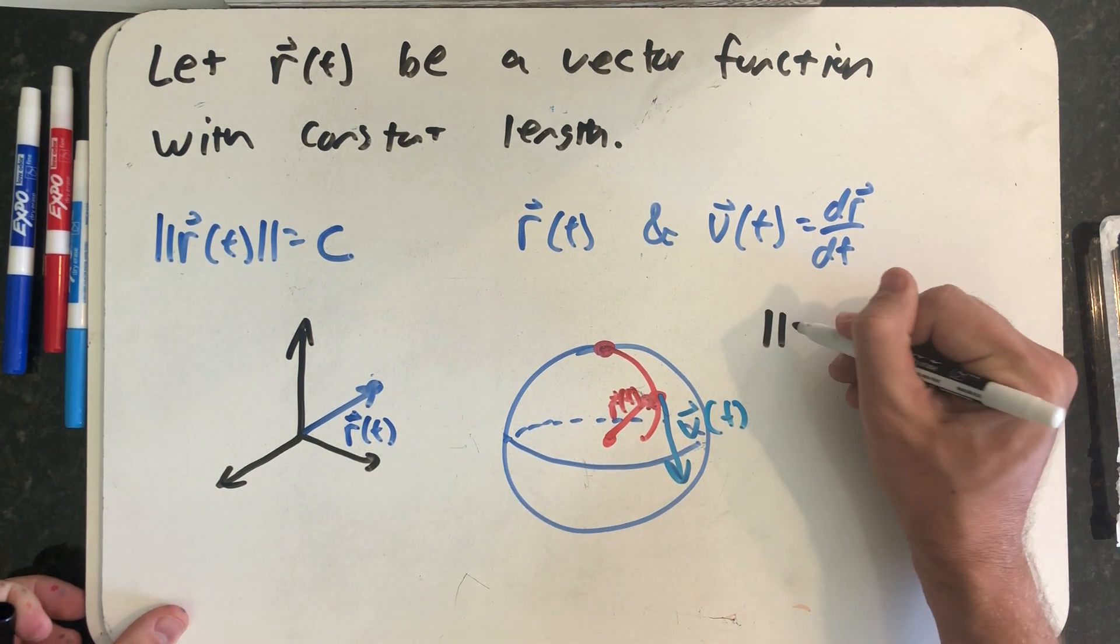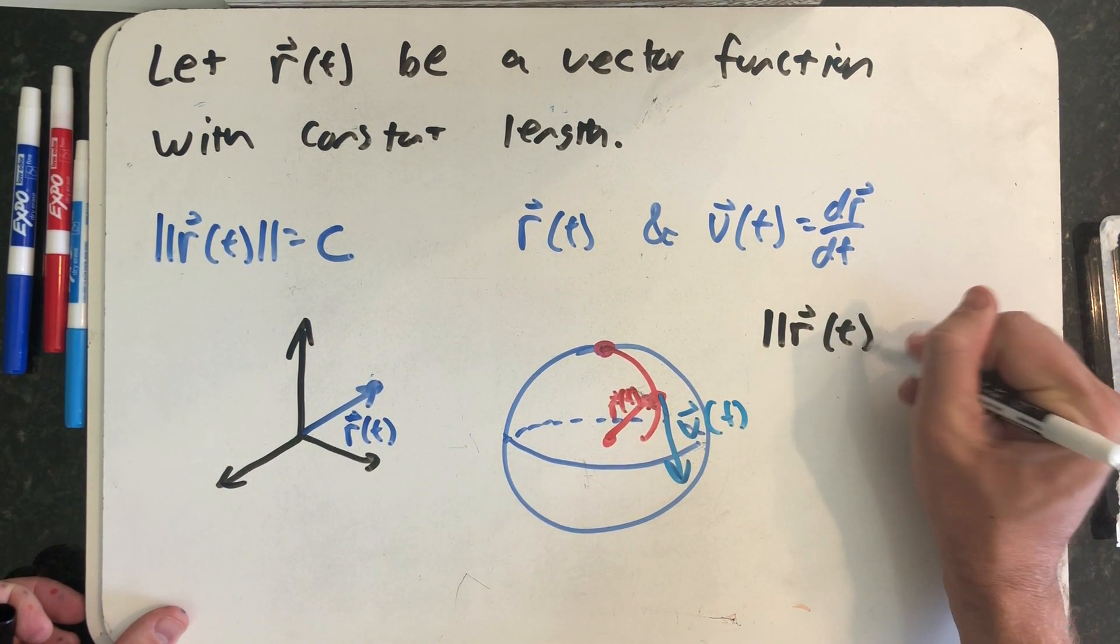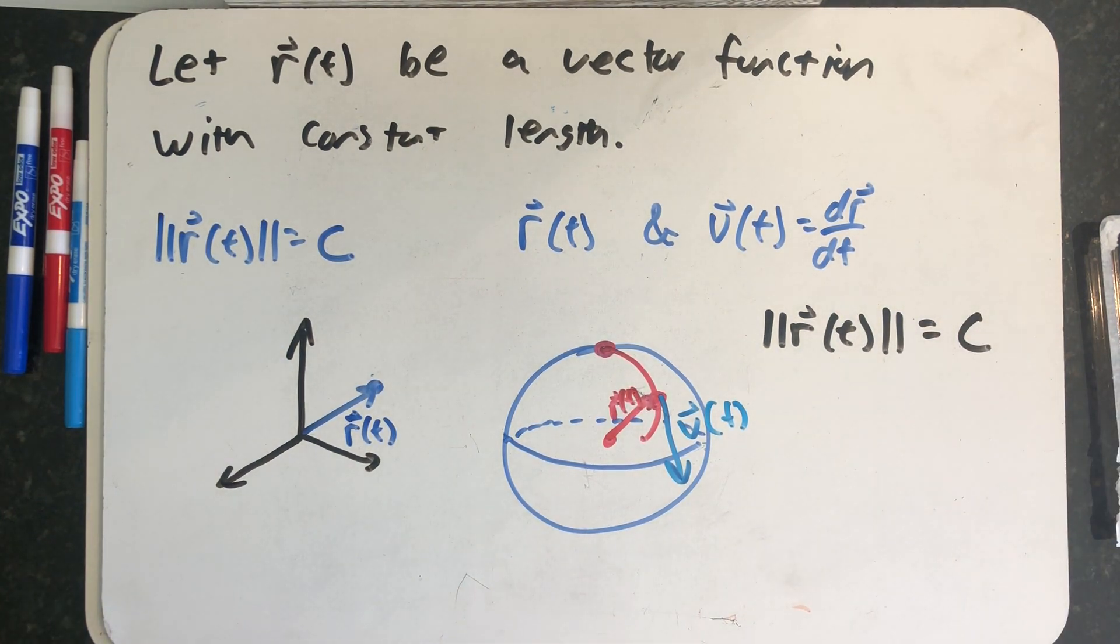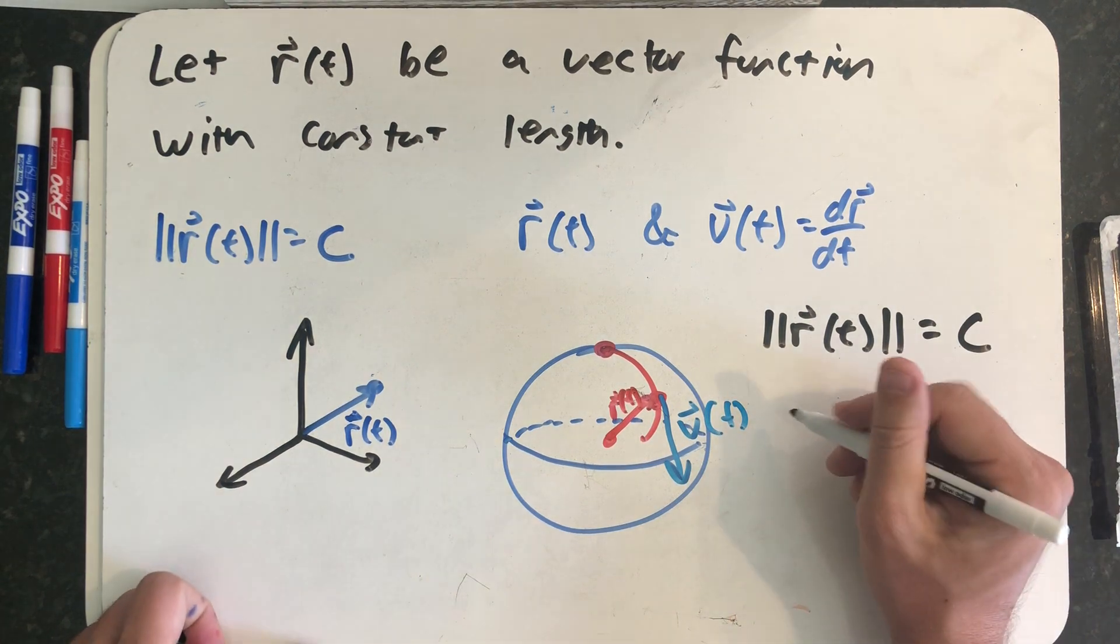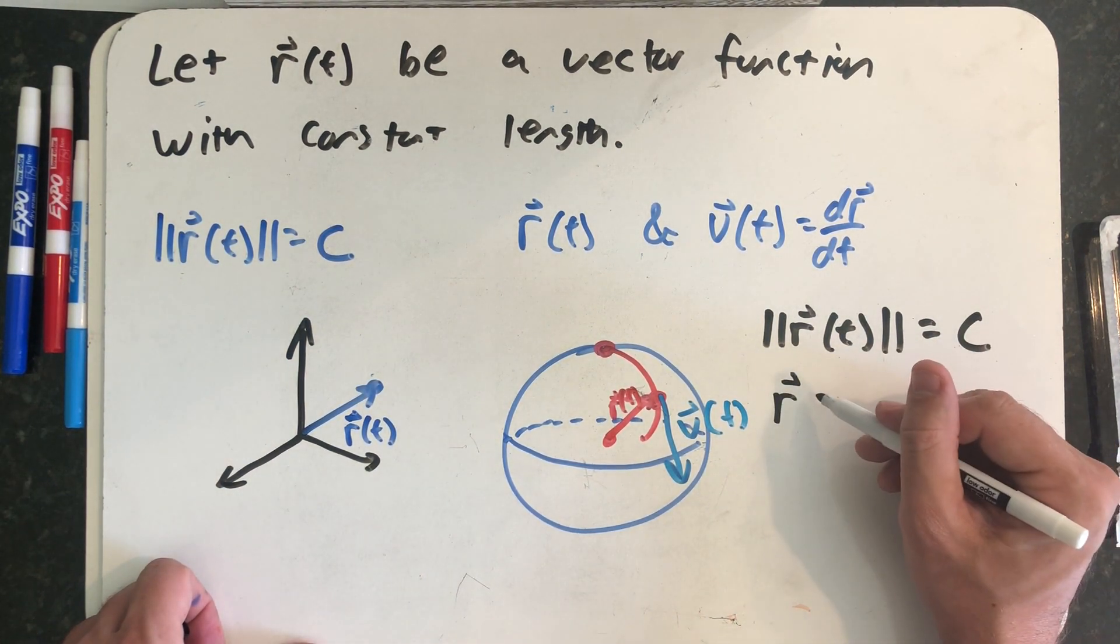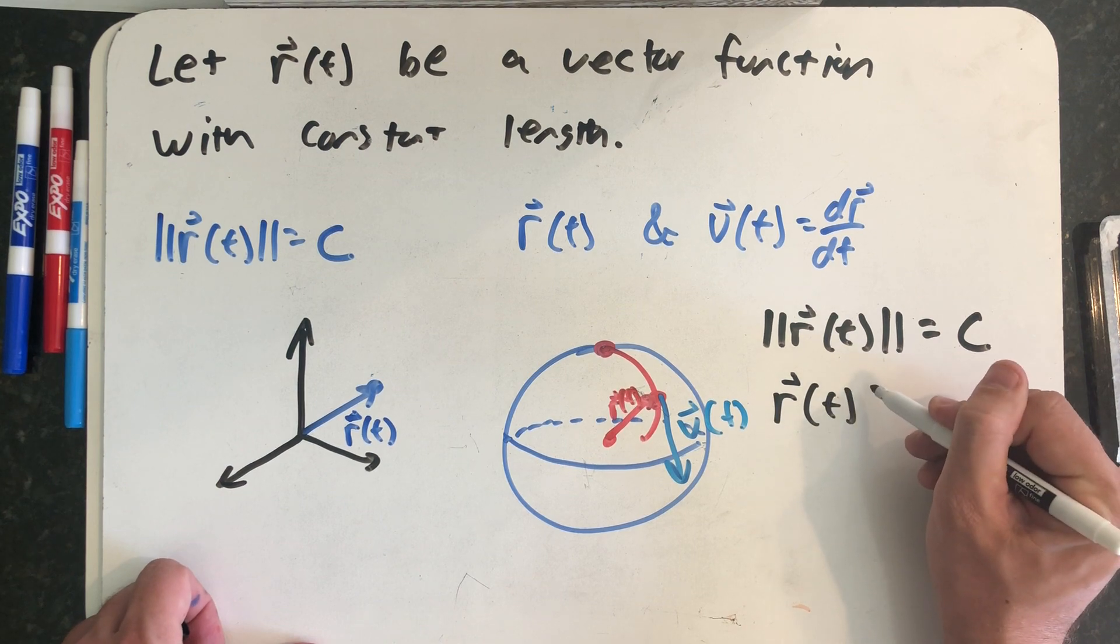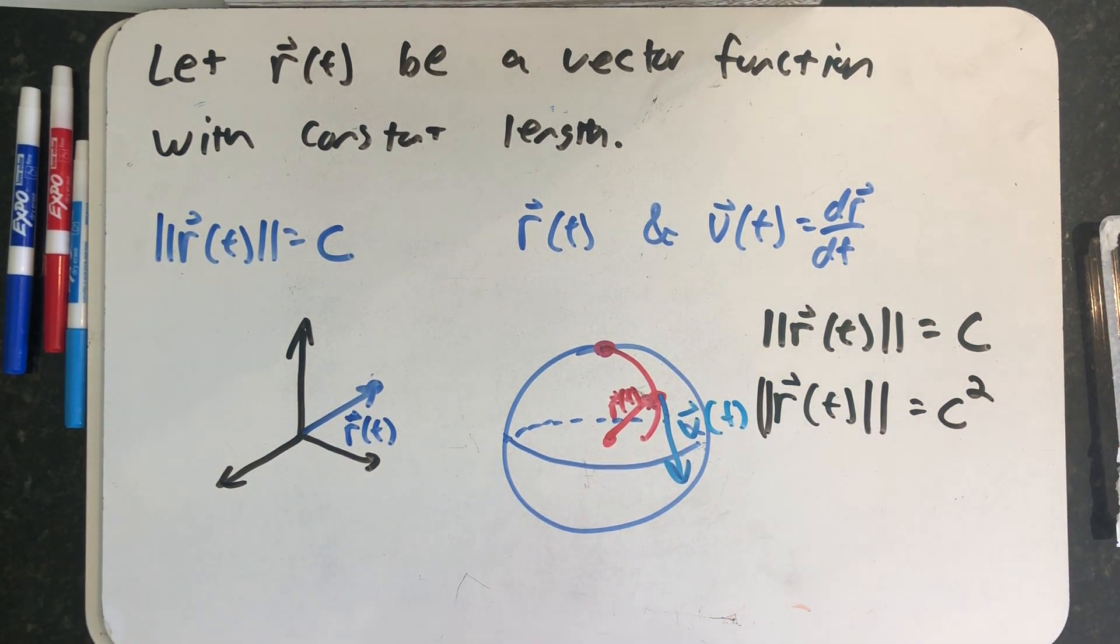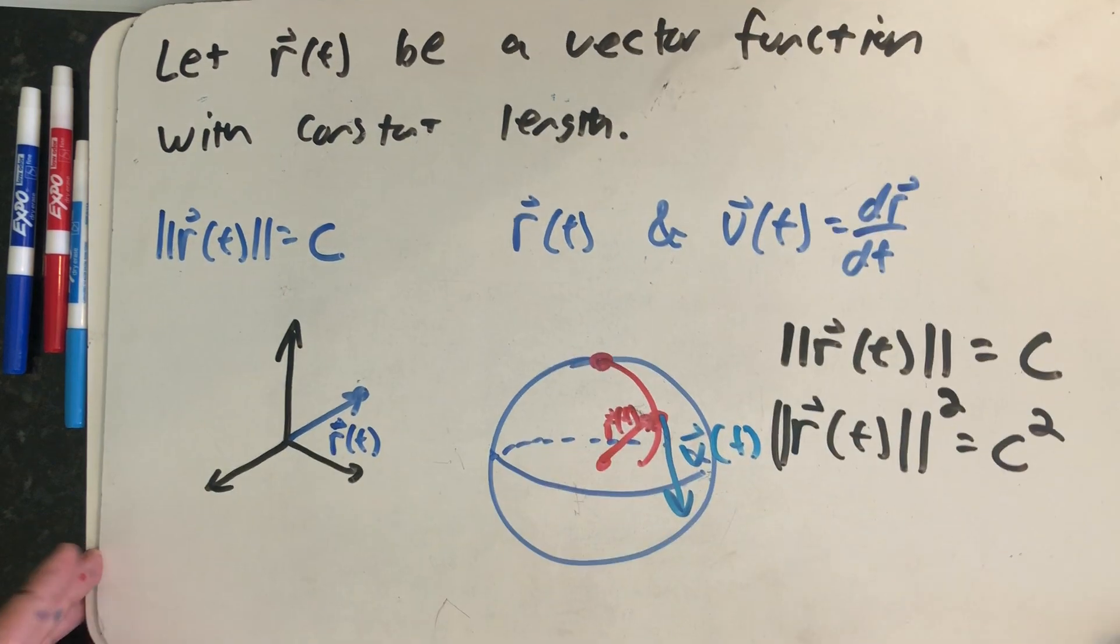I know that R of t in magnitude is equal to a constant C. Well, I also know that the magnitude squared would be equal to C squared. One of the neat things about squaring the magnitude of a vector is that lets me think about the dot product.